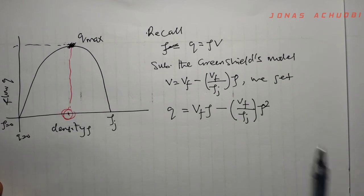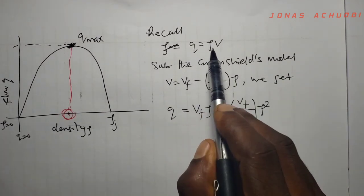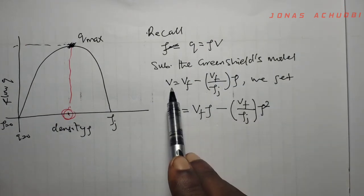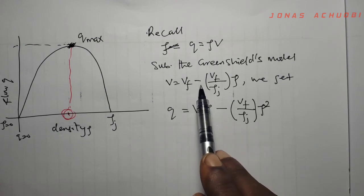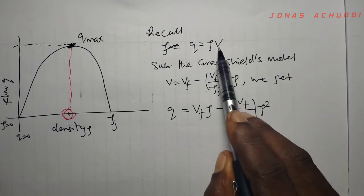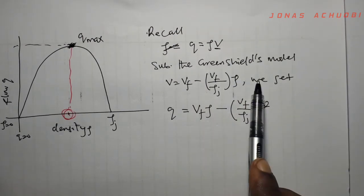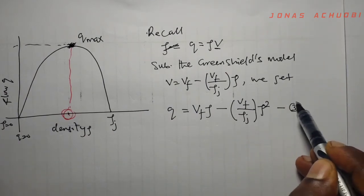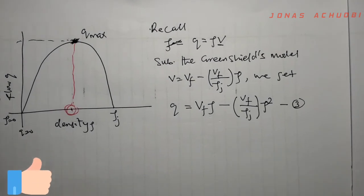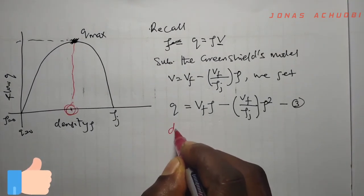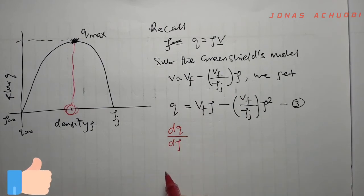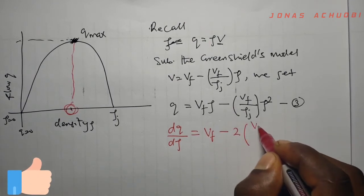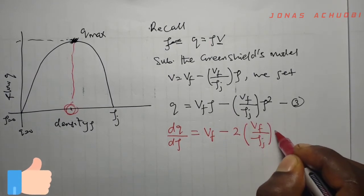Recall from equation 1 that Q = ρV. If we substitute the Greenshields model V = VF − (VF/ρJ)·ρ into this equation in place of V, we get equation 3: Q = ρ·[VF − (VF/ρJ)·ρ]. Differentiating Q with respect to ρ gives: dQ/dρ = VF − 2·(VF/ρJ)·ρ.